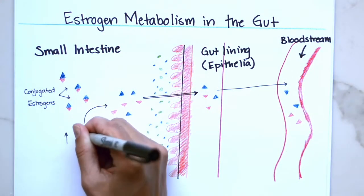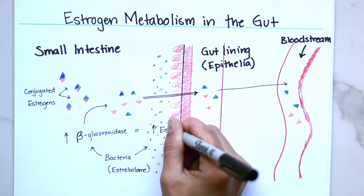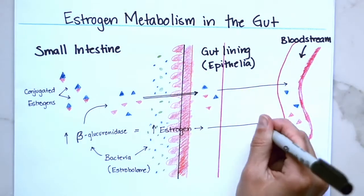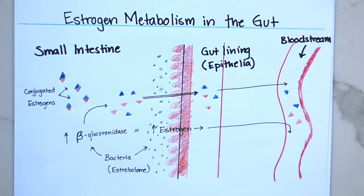Much like the rest of the microbiome, the estrobilome is easily influenced by factors such as diet, lifestyle, antibiotic use, history of vaginal delivery or not, age, and alcohol use.